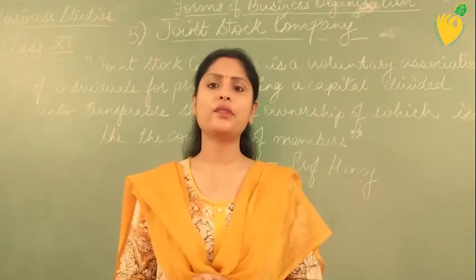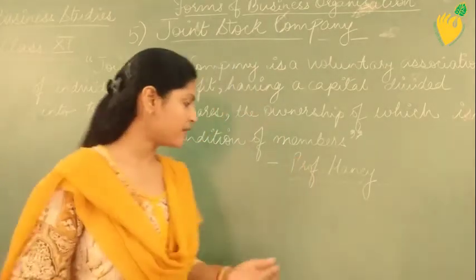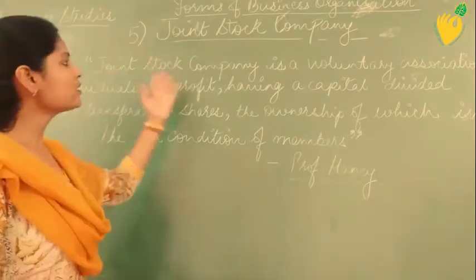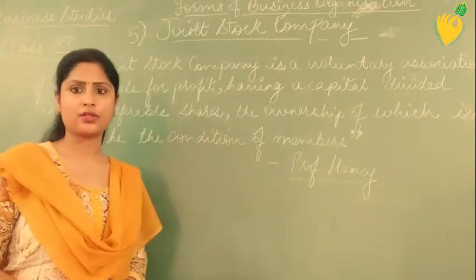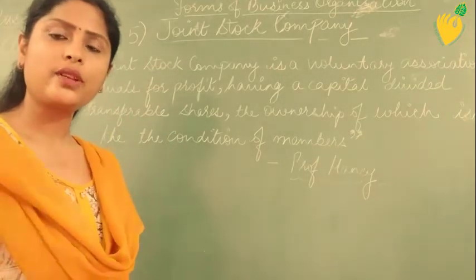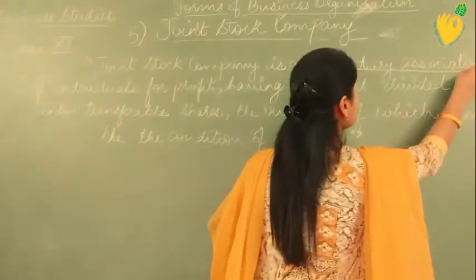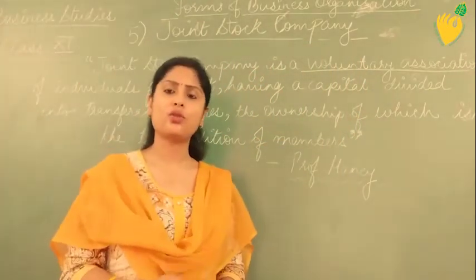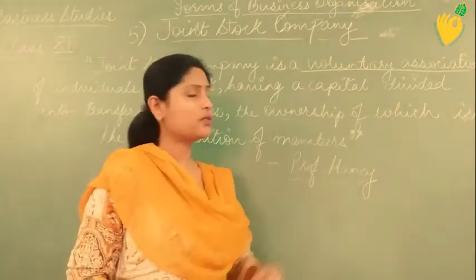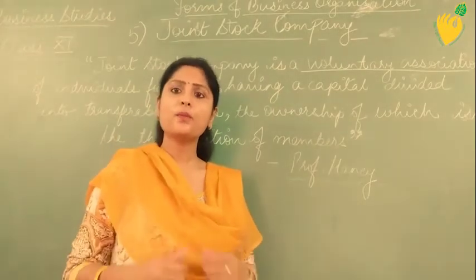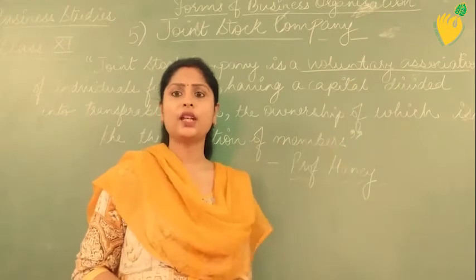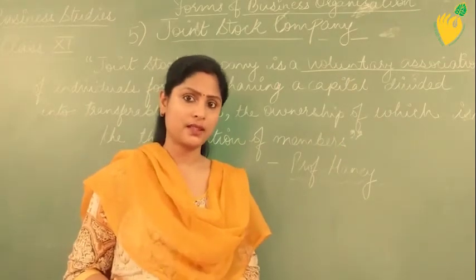Let's start with the definition given by Professor Heming. The definition says: Joint Stock Company is a voluntary association. What do you mean by voluntary association? Voluntary means willingness. So anybody can join a Joint Stock Company. An association is a group, a team. People can come together and create an association willingly — nobody is going to pressurize them for this.